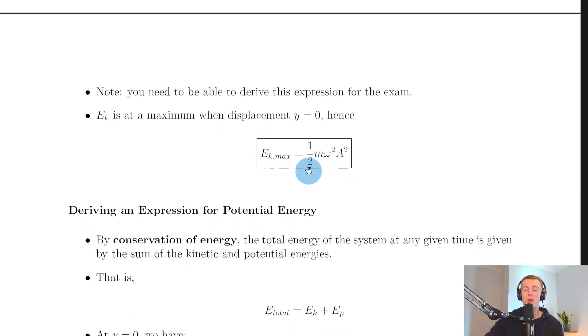This simplifies when thinking about maximum kinetic energy, but this formula won't appear on your relationship sheet. You just need to remember that maximum kinetic energy occurs at y = 0.